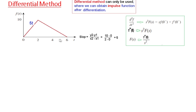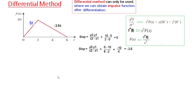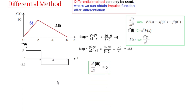First, we find the slope of the line using the slope formula — the slope is 5, so the line equation is 5t. Similarly, the second segment has a slope of minus 2.5, giving minus 2.5t. Differentiating 5t gives a constant 5, and differentiating minus 2.5t gives a constant minus 2.5, which we have drawn as straight horizontal lines.